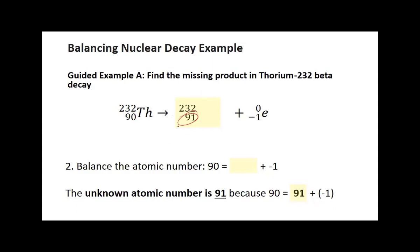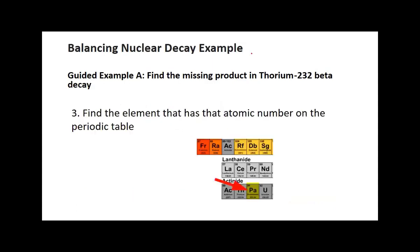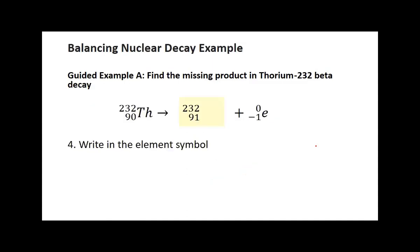What number is missing here that can add to negative 1 that will make 90? What plus negative 1 equals 90? It's going to be 91. So 91 is going to be placed there. Sometimes you'll see the atomic mass, sometimes you'll see the atomic number written in the equation. So here I have the atomic mass up top. But now what you have to do is look on the periodic table. Find the periodic table in your notes. Look for 91. What has the atomic number of 91? You find it, you fill it in. It's going to end up being PA. Once you know the atomic number, the number of protons, you can only have one element that goes with that.